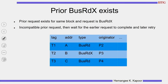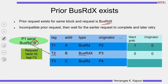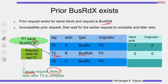Next is the case where a prior bus read X transaction exists — a conflicting transaction. If P1 wants a bus read on block B but the request table already has a T2 transaction of type bus read X originated by P3 for block B, we cannot allow this to proceed. The design specification says conflicting transactions are not permitted, so we cancel this request and retry later — specifically, after T2 completes.